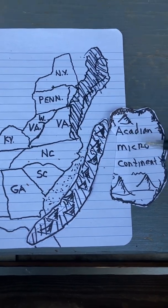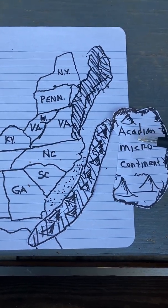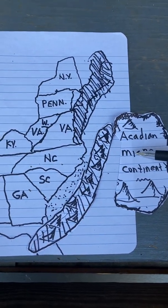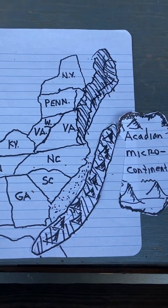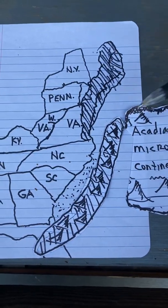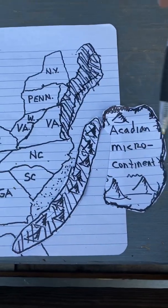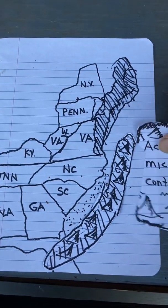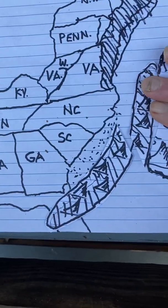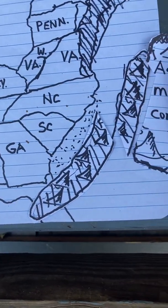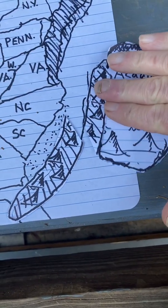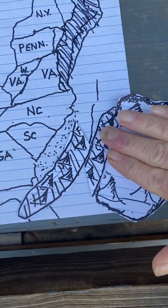We're now calling this piece not the Acadian microcontinent but the Carolina Superterrane, or Carolina Terrane, because that's what it's going to become. After the Cat Square Basin formed, the Carolina Terrane kept pushing south, broke the Inner Piedmont loose from where it was attached, and the Inner Piedmont, the Cat Square Basin, and the Carolina Terrane all slid south together along the Brevard Fault Zone.